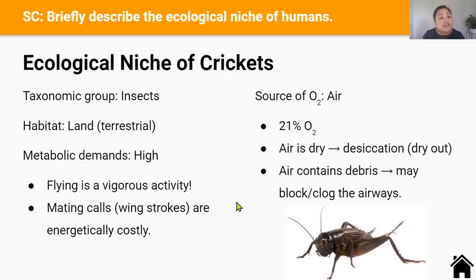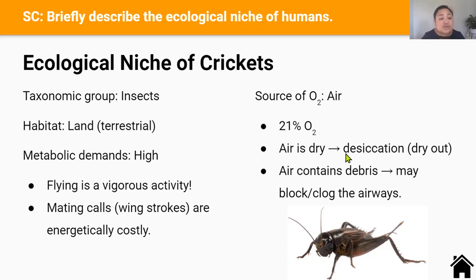Crickets belong to the insect taxonomic group. They are terrestrial animals, which means they live on land, and their source of oxygen is air which has 21% oxygen. Air is dry, so insects are very susceptible to desiccation or drying out. Because insects are so small compared to mammals, they have a high surface area to volume ratio, which means they're way more susceptible to drying out faster than mammals. Air also contains debris which may clog or block the airways.